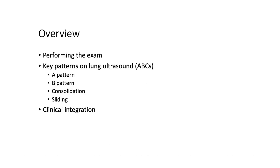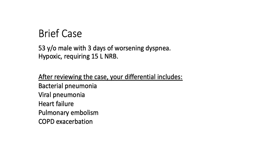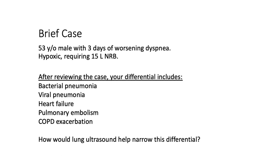An overview of the talk today: we'll start with how to perform the exam, look at patterns we'll find on lung ultrasound, and discuss how to apply them clinically. As a brief case, we start with a 53-year-old male with three days of worsening dyspnea. He's hypoxic, requiring 15-liter non-rebreather. Our differential includes bacterial or viral pneumonia, as well as heart failure, PE, and COPD exacerbation. The question arises: how would lung ultrasound help to narrow this differential?